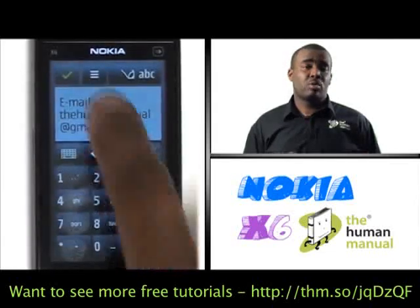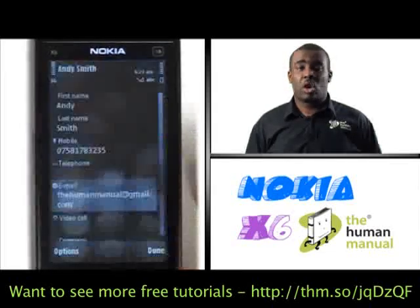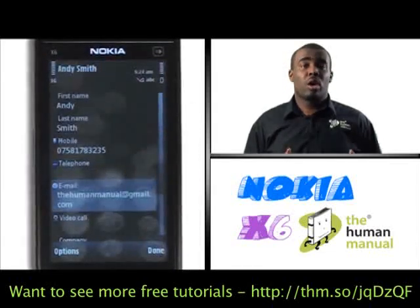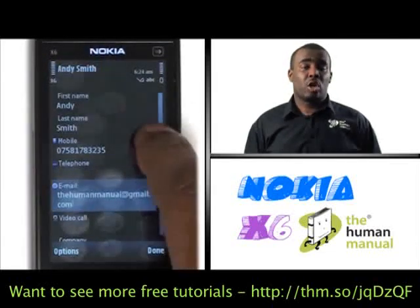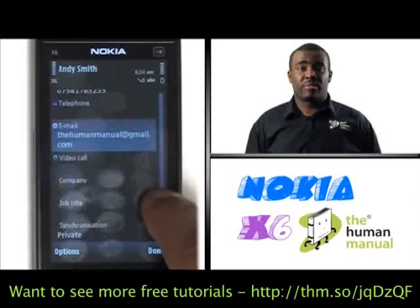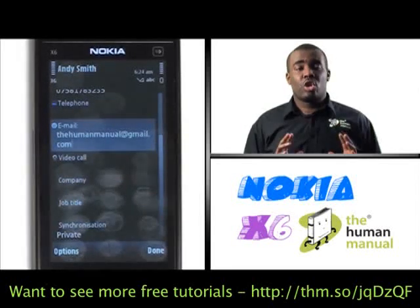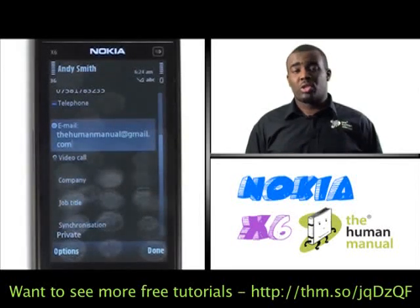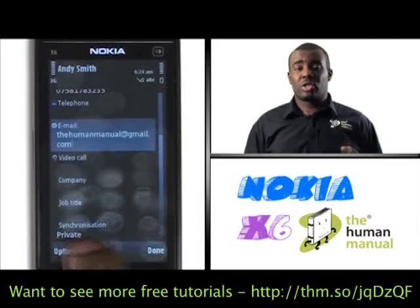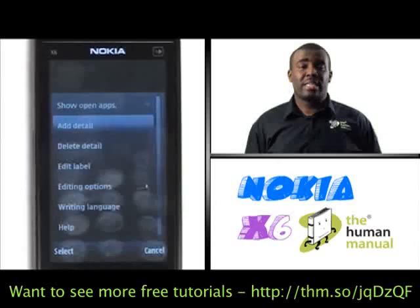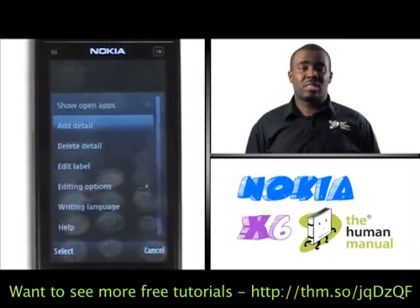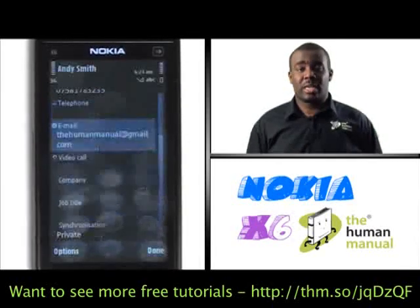As you scroll up you can add multiple numbers such as office, work, home telephone numbers, and fax numbers. You can also press Options — if you press Options and choose Add Detail, you'll see there's an array of additional information like birthdays and spouse's names that you can add to your contact.